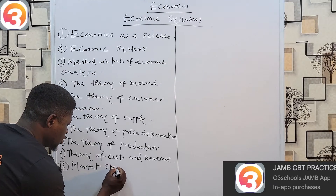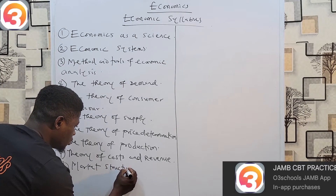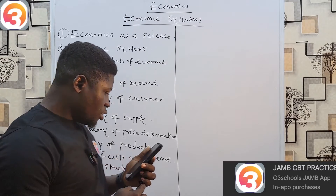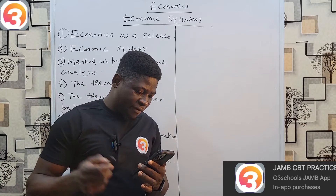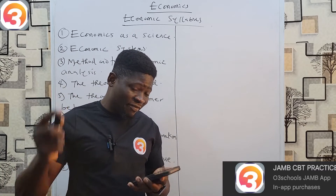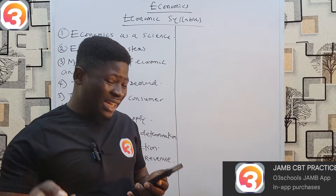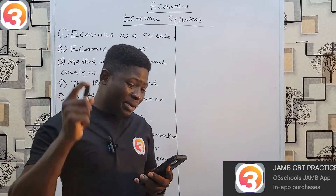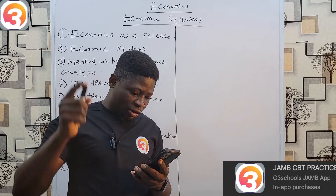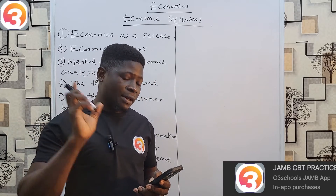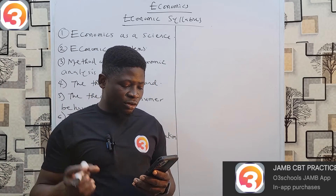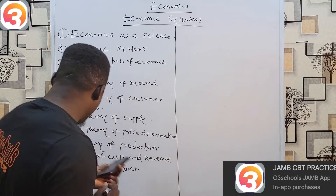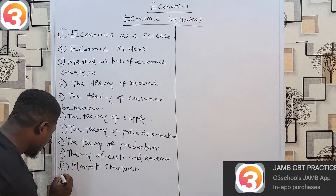Number ten is Market Structures. Under market structures, look at perfectly competitive markets, imperfect markets, and break-even or shut-down analysis in the various markets. Number eleven is National Income.